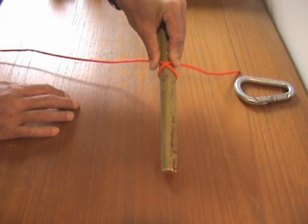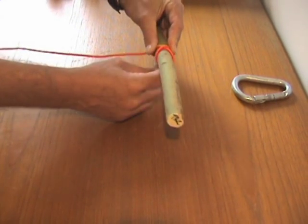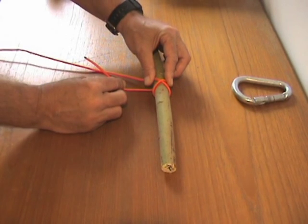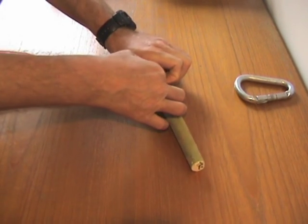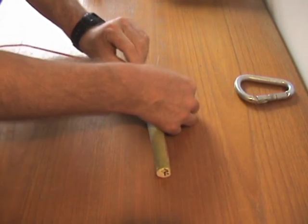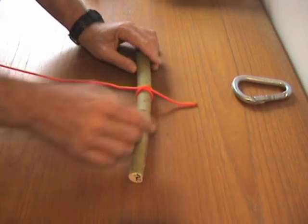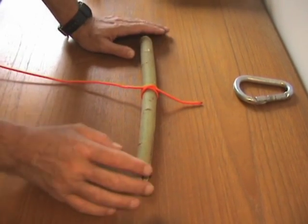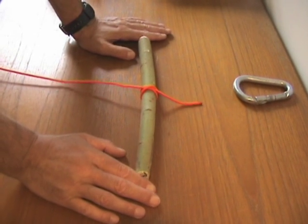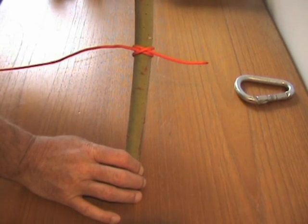But you stay on the same side of the long end, and you cross it through the cross that you made. And there you have your clove hitch.